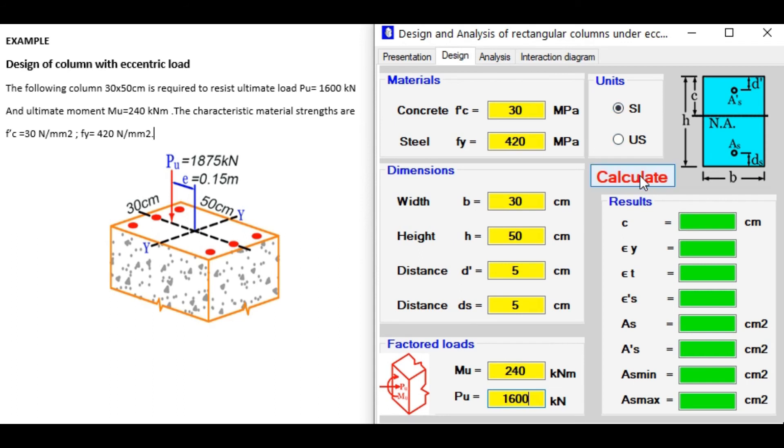In SI unit, calculate. We obtain the distance of natural axes on the strains, steel area, tension steel area and compression steel area.